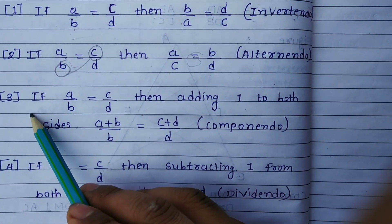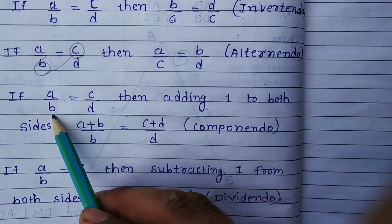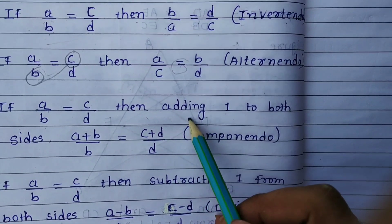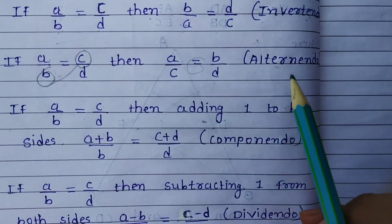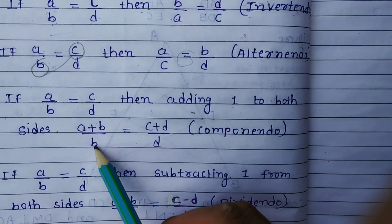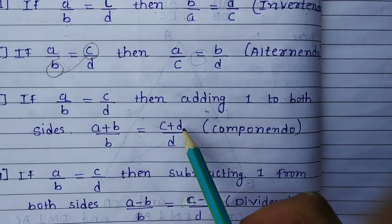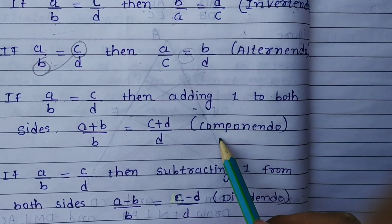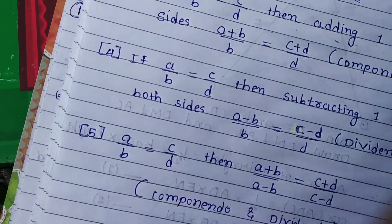Now third result: if a upon b is equal to c upon d, then adding one to both sides, a plus b upon b is equal to c plus d upon d. It is known as componendo.